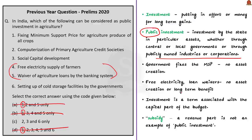Investment is a term associated with the capital part of the budget, so subsidy being a revenue part is not an example of public investment. Page 84 of the 2019-20 Economic Survey is in agreement with this. It says that given fiscal constraints, there is always a trade-off between allocating money through subsidies and increasing investments. As investments are the crucial input to increase productivity, the increasing focus on subsidies is harming the growth of the agricultural sector in the long run, and this imbalance needs to be urgently corrected. So the right option is option C, that is 2, 3, and 6 only.